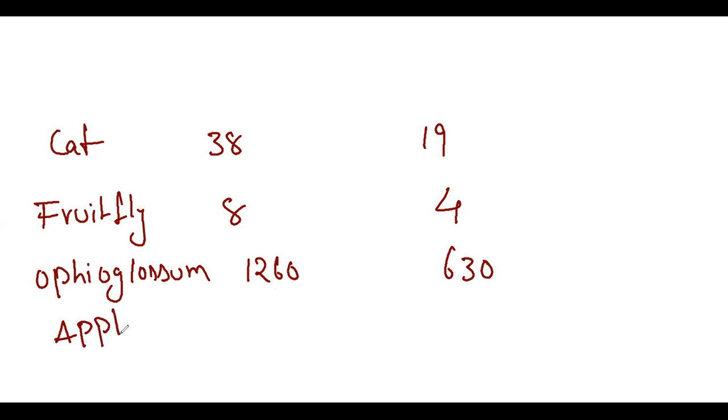Apple - 34 and 17. Remember 31 days in a month to help remember apple's numbers. Then Ophioglossum.